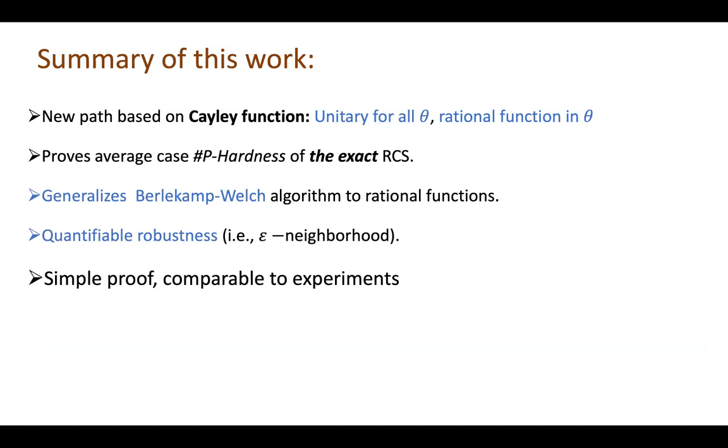So some technical ingredients and summary is that we have a Cayley function based path that fully stays in the unitary group, no Taylor series expansion truncation as approximation. So fully a unitary path that can interpolate between random and deterministic circuits. We use it to prove the average case exact Sharp-P hardness of the random circuit sampling. To do so, I have to generalize the so-called Berlekamp-Welch algorithm for determining rational functions based on sampling. So there was a quantifiable robustness and the proofs are very simple and comparable to experiment, which hopefully will help settle this conjecture.